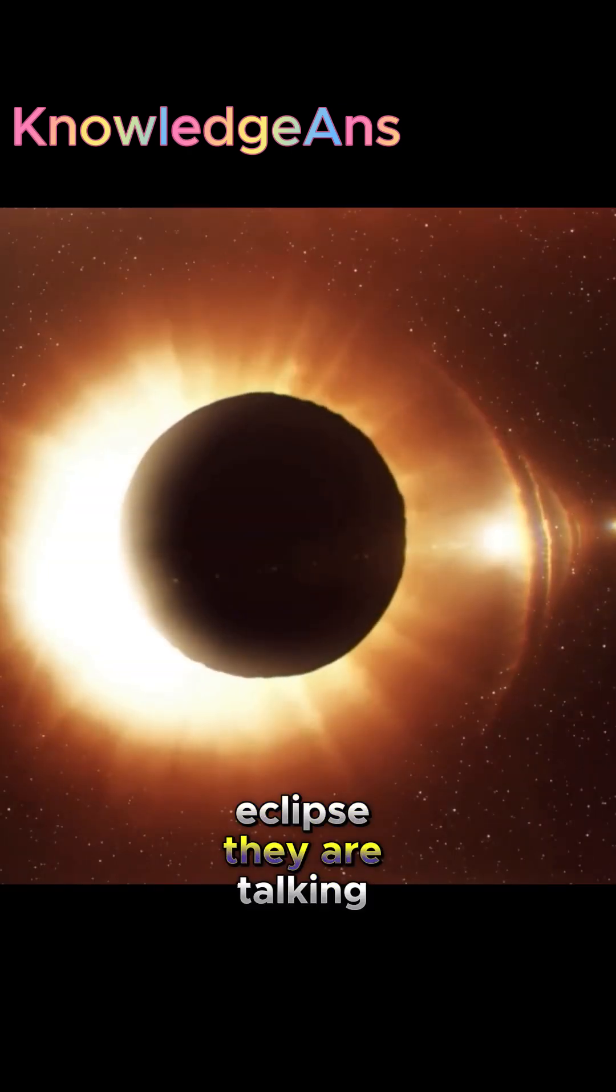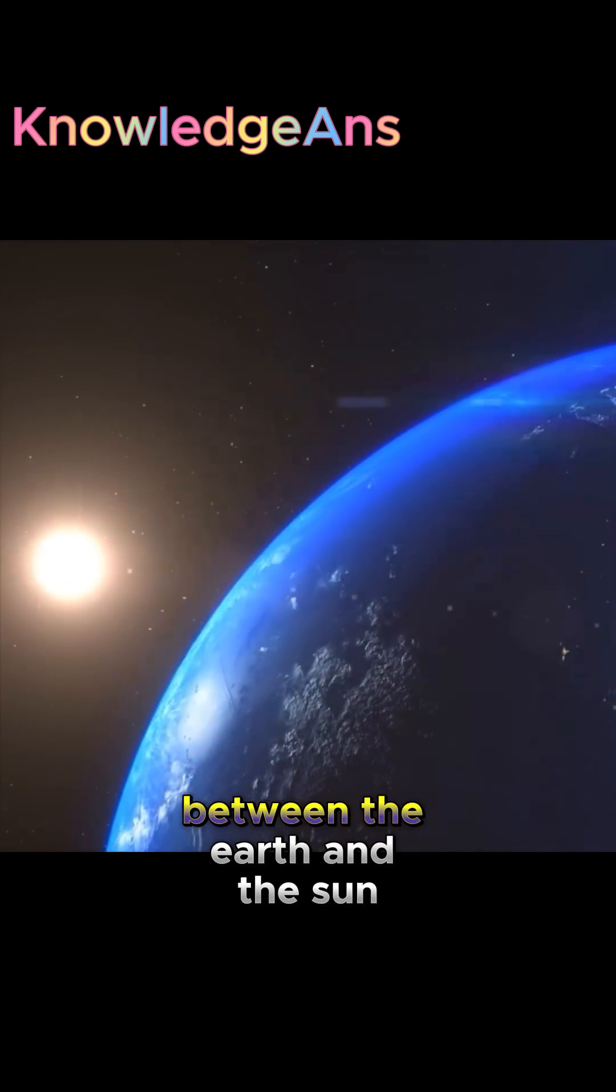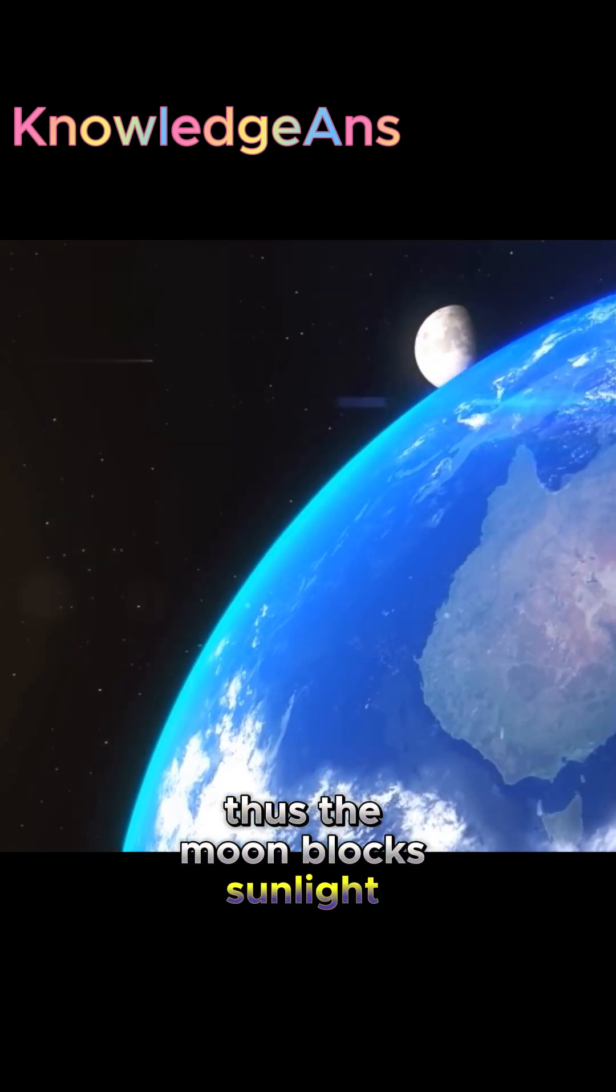We must first know which eclipse they are talking about. Simply put, an eclipse is an astronomical phenomenon that occurs when the Moon remains in space between the Earth and the Sun. Thus, the Moon blocks sunlight from the Earth.